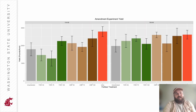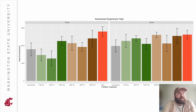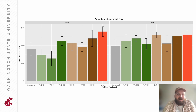Here I have a graph showing the yield. On the x-axis you can see the different types of fertilizer treatments, and on the y-axis you can see the yield in pounds per acre. Our different fertilizer treatments did impact the yields, but whether these relationships are significant remains to be seen as we have further statistical analyses to conduct.